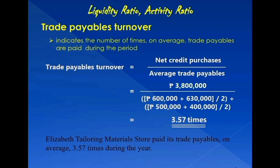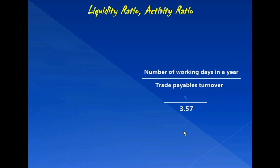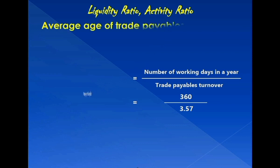In general, the higher the trade payables turnover ratio, the better. A higher figure is viewed more favorably, especially by short-term creditors, since this ratio is also a test of an entity's liquidity or ability to pay short-term obligations. The trade payables turnover, when used as denominator to divide 360 working days, gives us the average age of trade payables of 101 days.